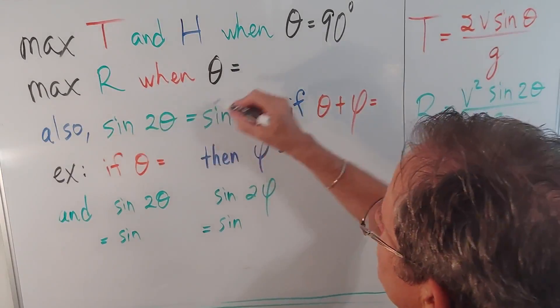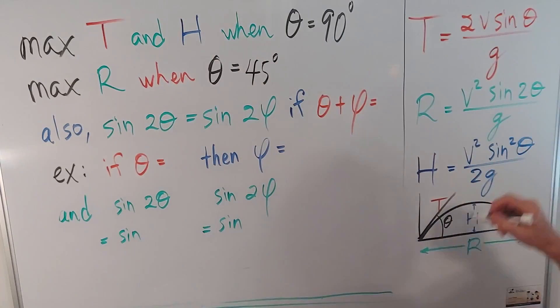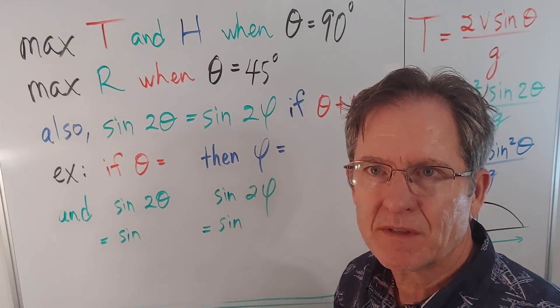And the maximum range is when theta equals 45 degrees because of the 2 theta here. 2 times 45 is 90. The sine of 90, which will then appear to be here, here, and here, is 1, which is the maximum value of sine. So that is true.